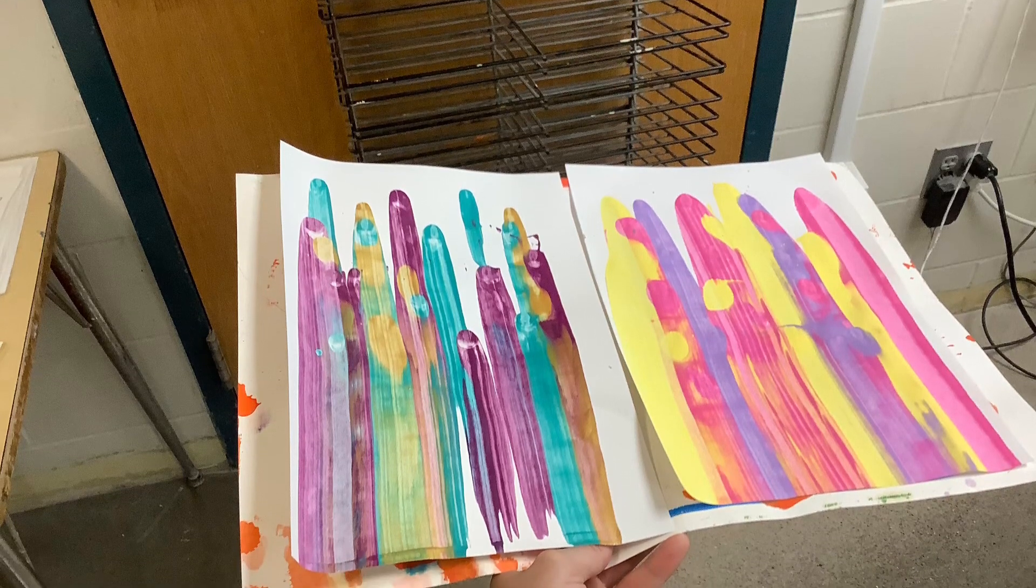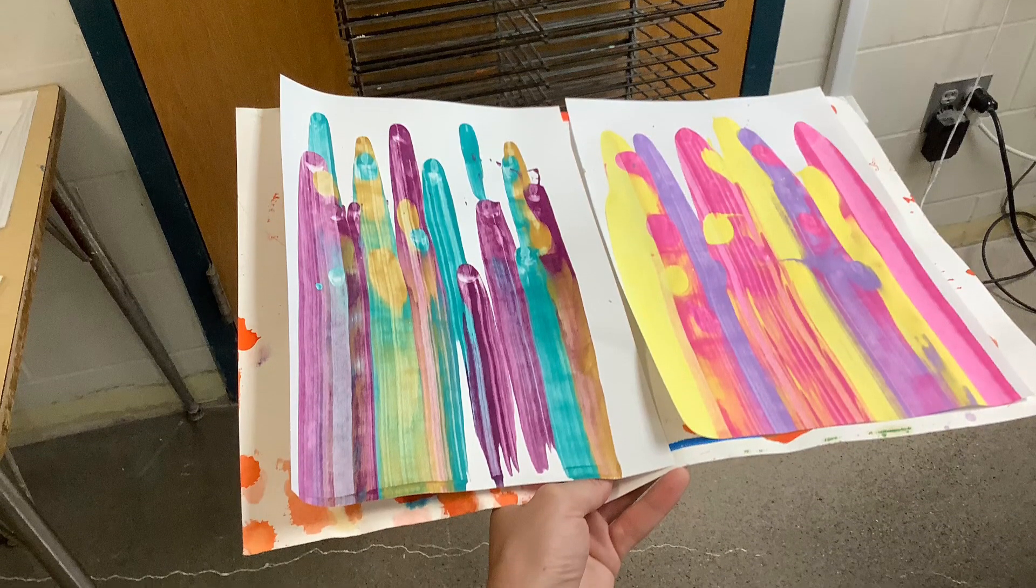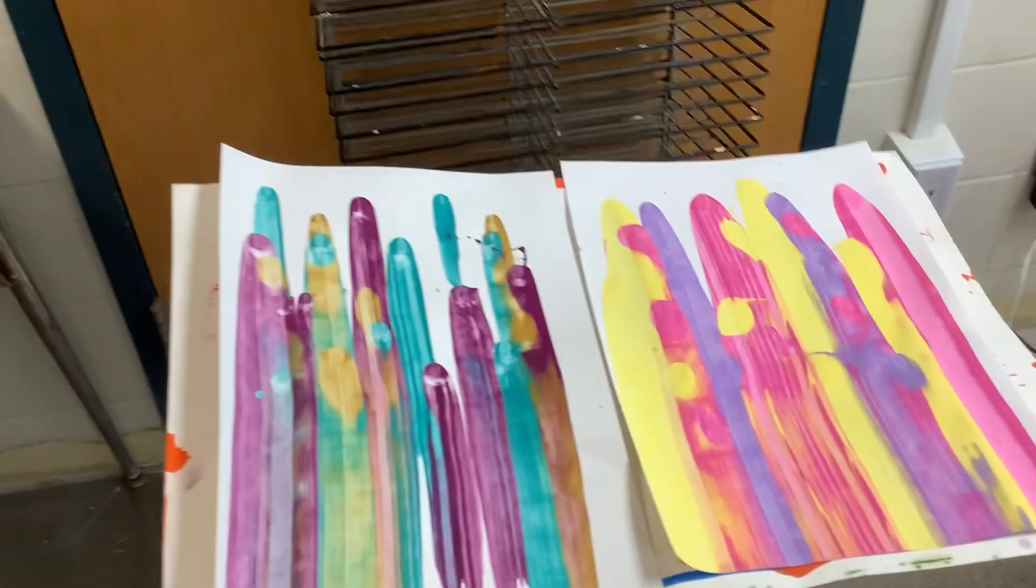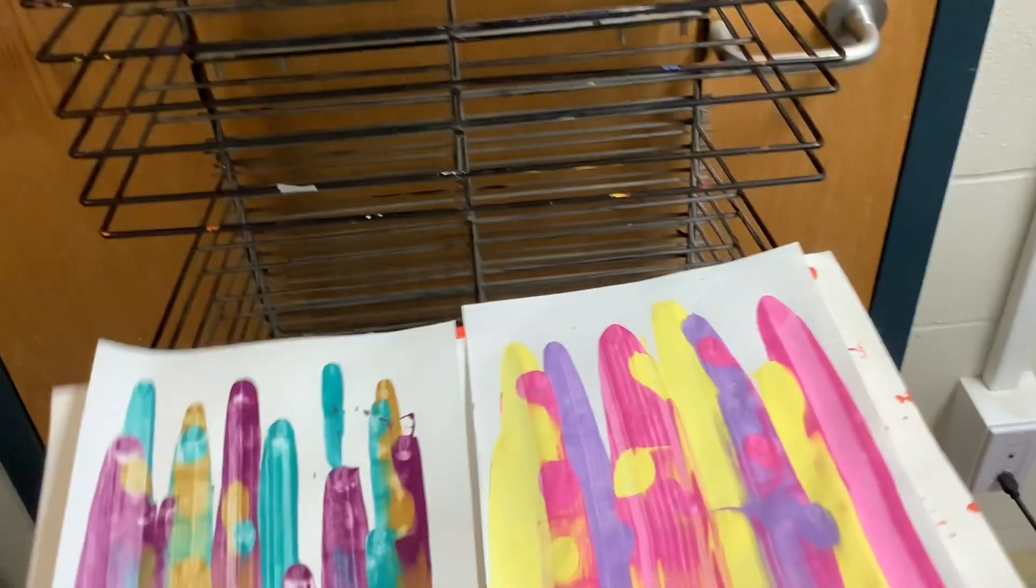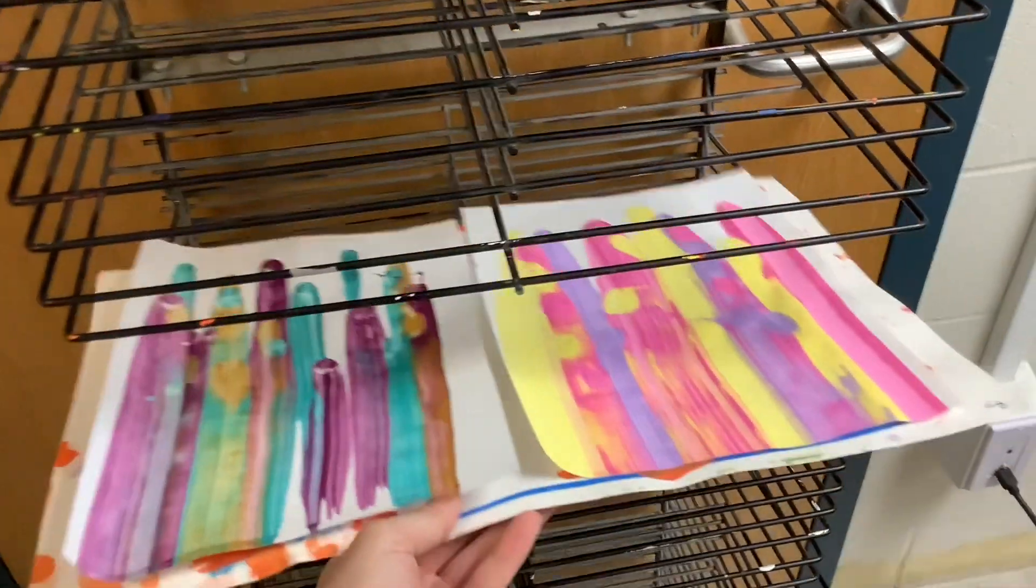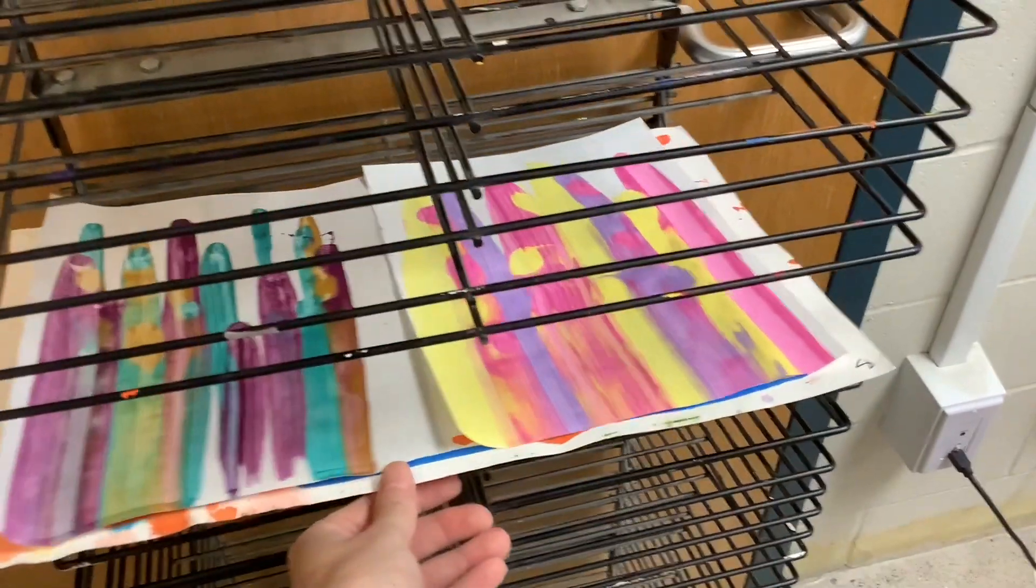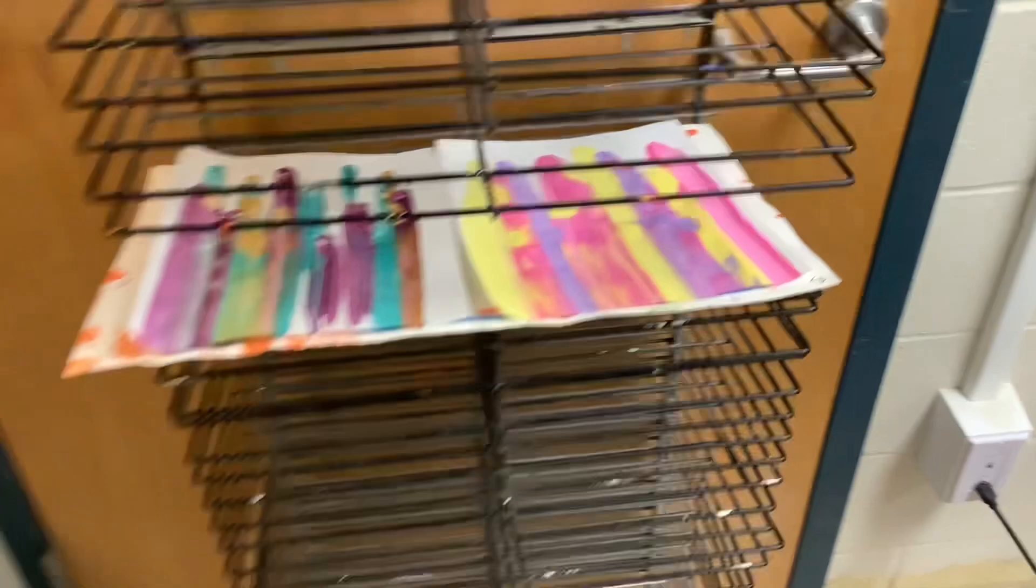Then you will put your project on the drying rack side by side since we will each make two paintings today. You will need to get yourself a new placemat from the top of the drying rack to put your two projects on.